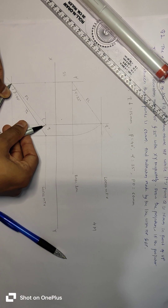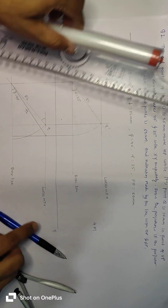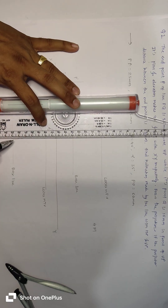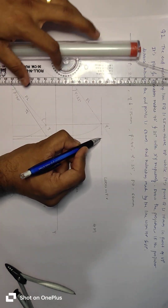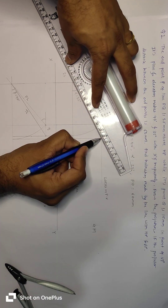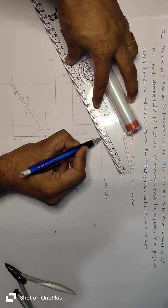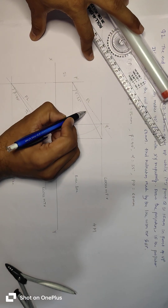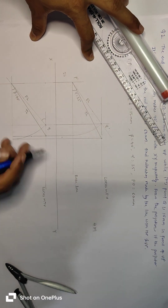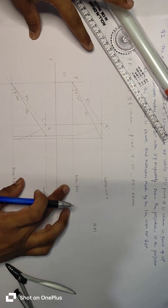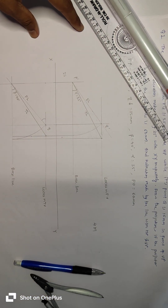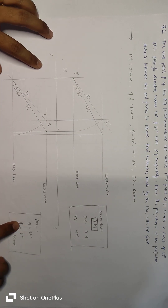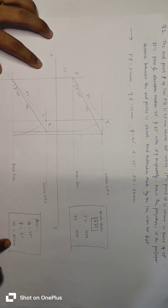If you draw the plan length and take the projection of this point onto the opposite side locus line, then you will get the end point. The answer is: theta is equal to 27 degrees, and true length is 90 mm.